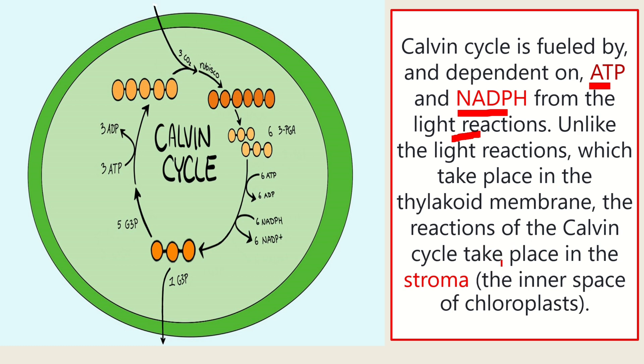And the Calvin Cycle takes place in the stroma. Stroma is the liquid portion of the chloroplast.